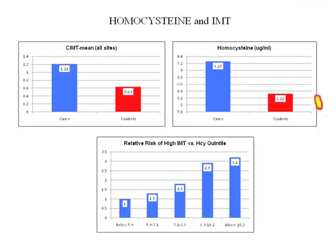Those with a high IMT (mean 1.2) have a much higher homocysteine than those with a less severe IMT (0.63). Looking at relative risk of being in the high-IMT group as a function of increasing quintiles of homocysteine: if you are in the upper 20% for homocysteine — just above 10.2 — you are 3.2 times as likely to have a high IMT compared to those at 6 or below. High homocysteine is thus an important predictor of cardiovascular risk via endothelial dysfunction and elevated IMT.